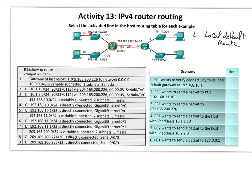The router adds one route entry for each interface with the exact match of that particular address. For example, this IP address is the IP address of the network, not the switch — switches do not have IP addresses. This address is for the entire LAN. So for PC1 we have 192.168.10.10, and the default gateway or exit interface address is 192.168.10.1.